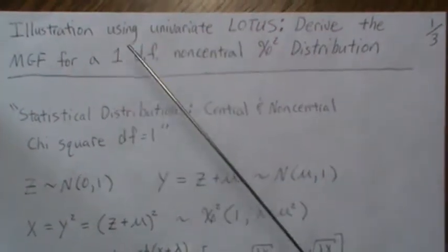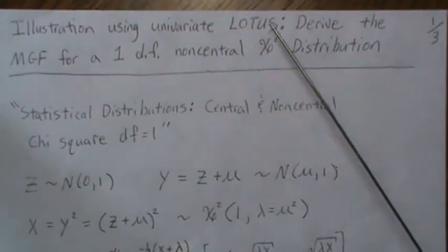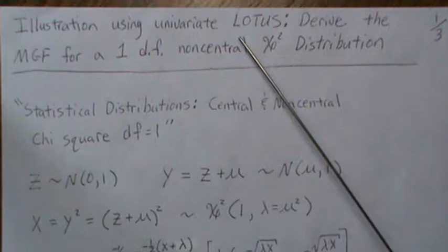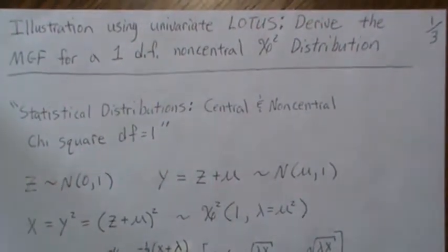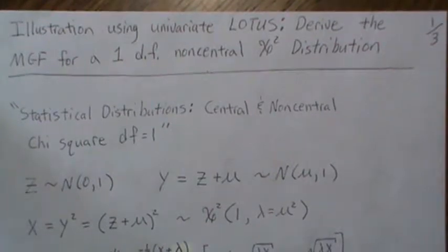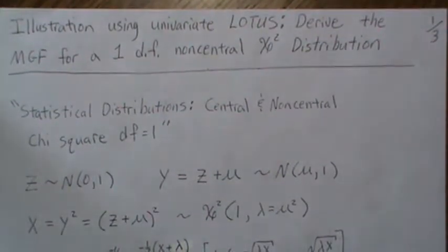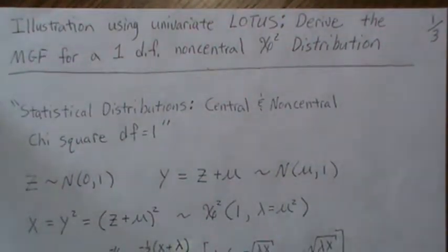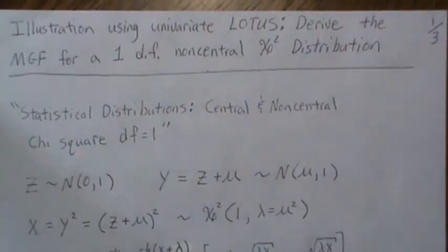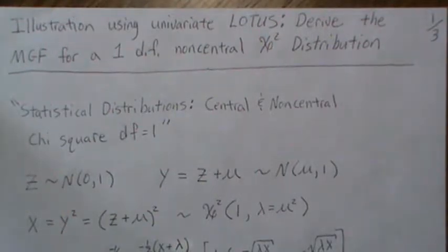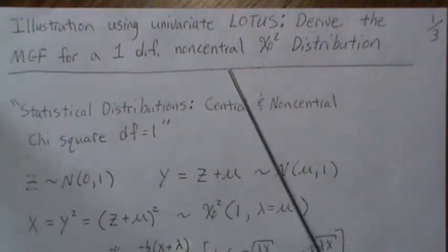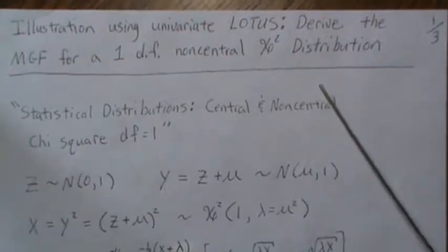And we're also going to illustrate the concept of LOTUS, which is an acronym for Law of the Unconscious Statistician. And it's the way you take expectations. For LOTUS, that'll be page three where we talk about that in a little more detail. But these first two pages will derive the moment generating function for a non-central chi-square distribution.